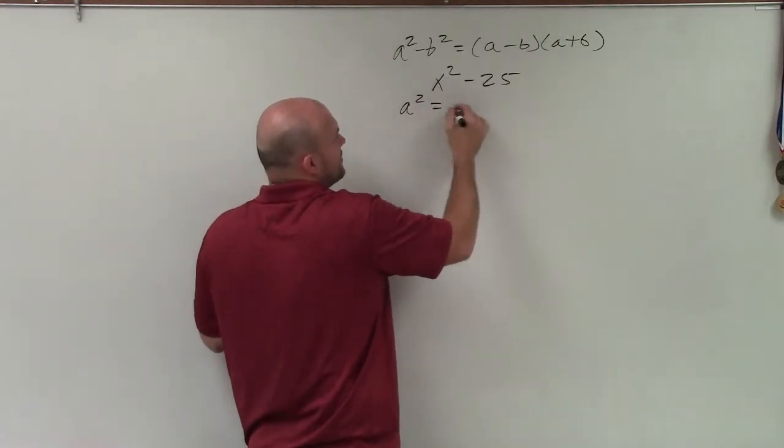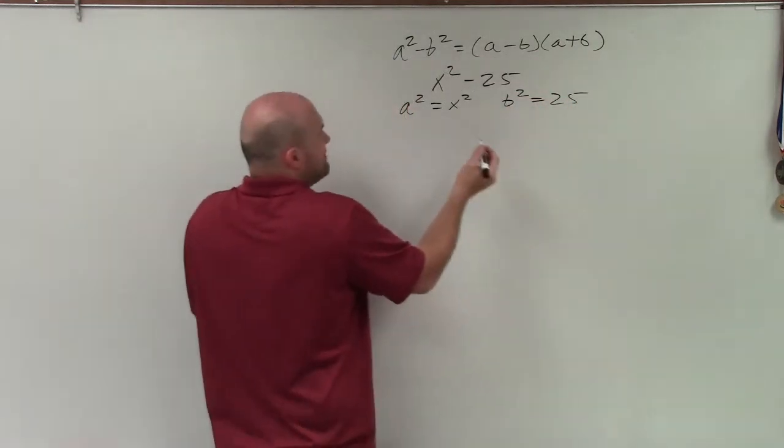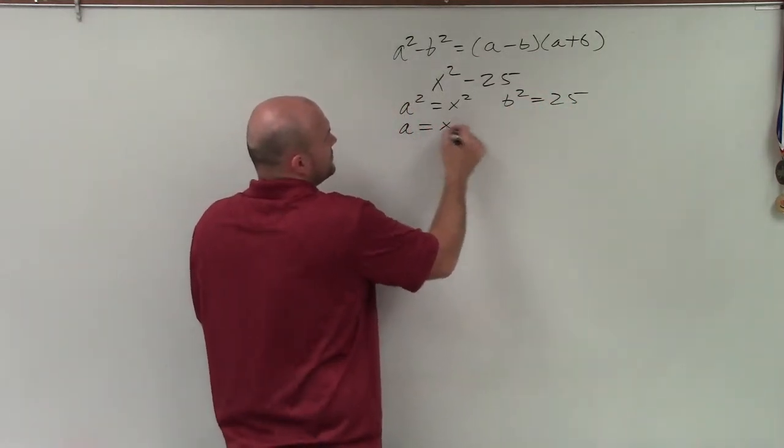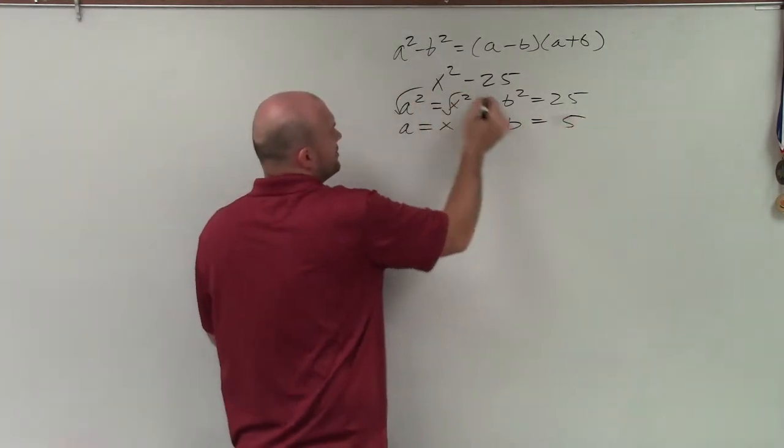So I could say a² = x² and b² = 25. Therefore, I can say a = x and b = 5, as you take the square root of both sides.